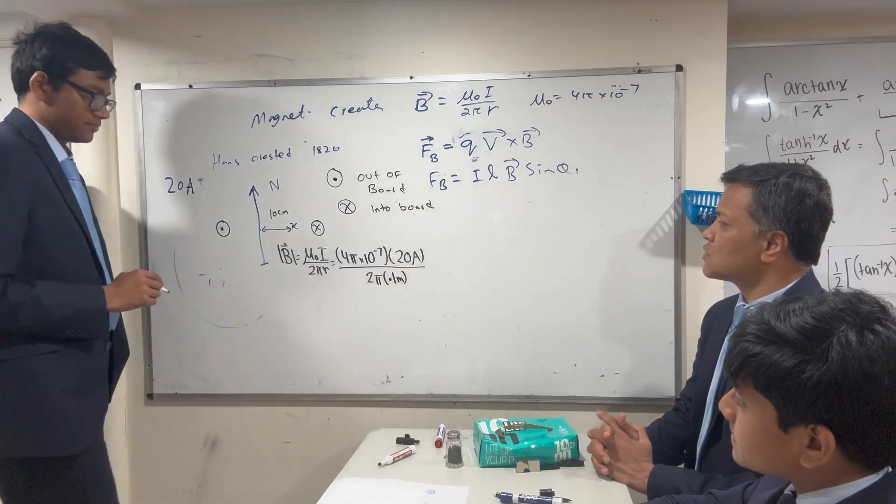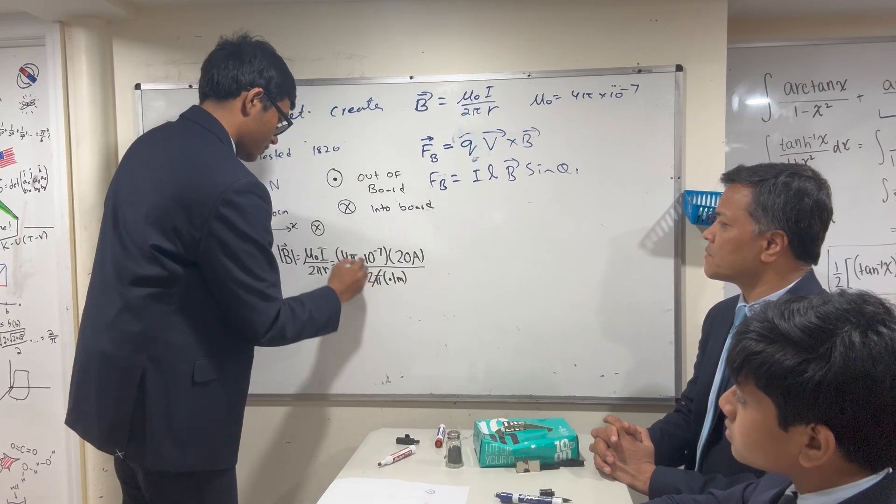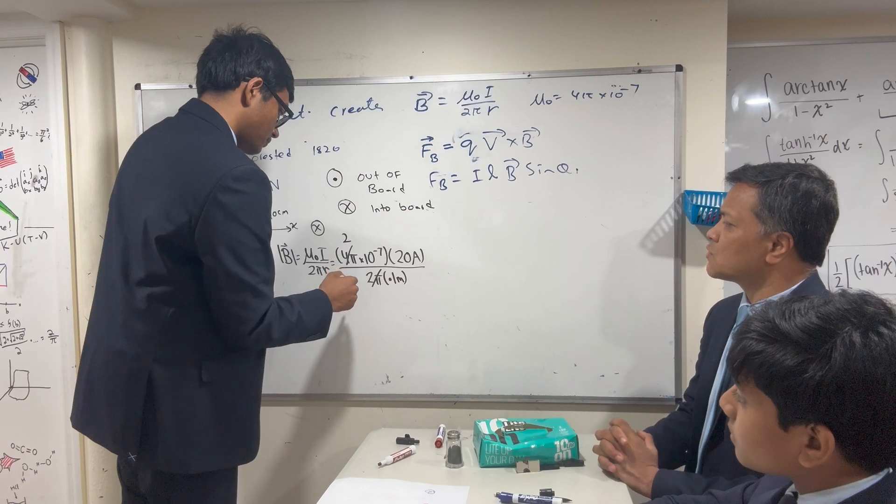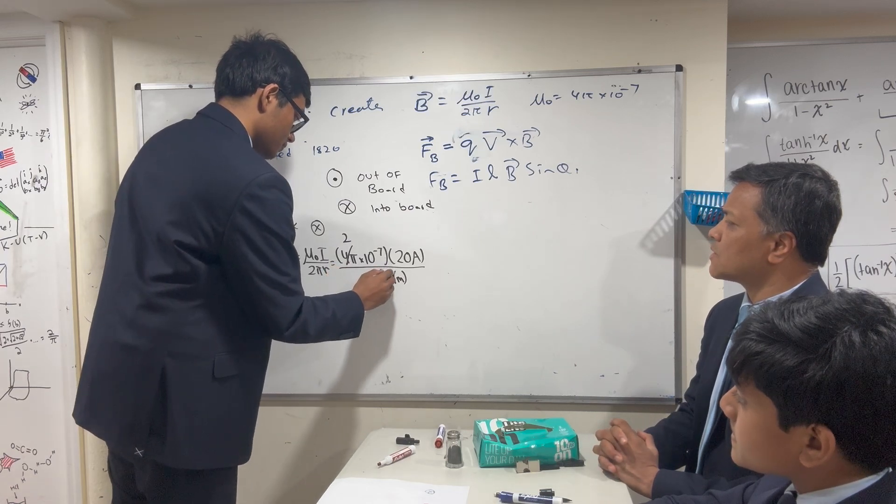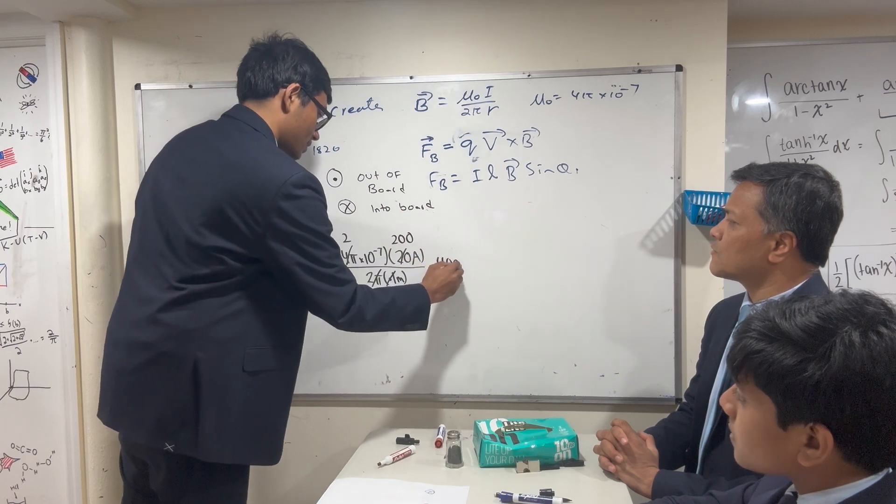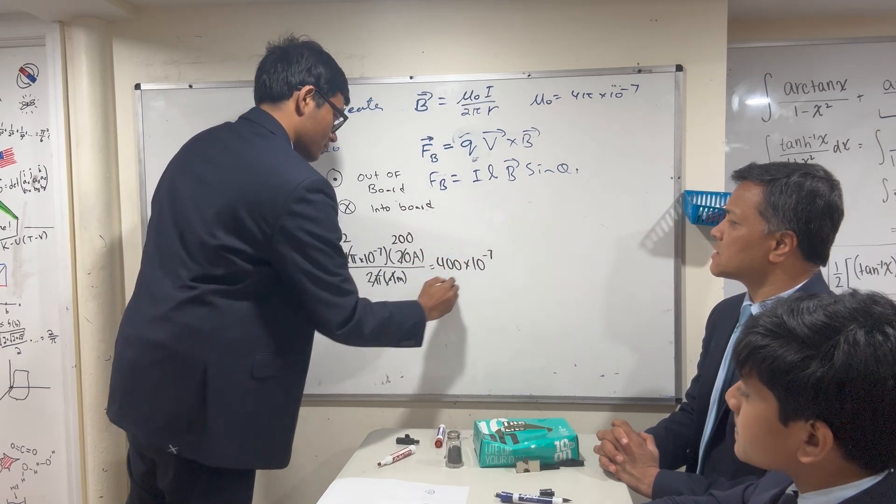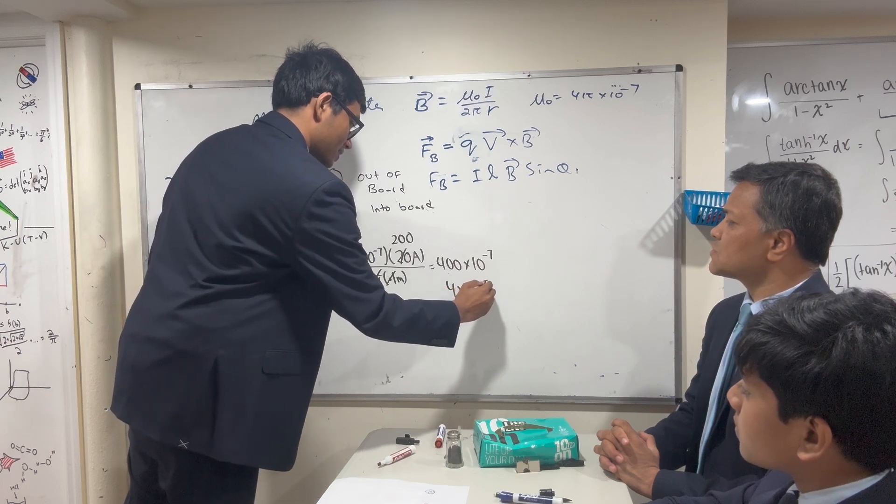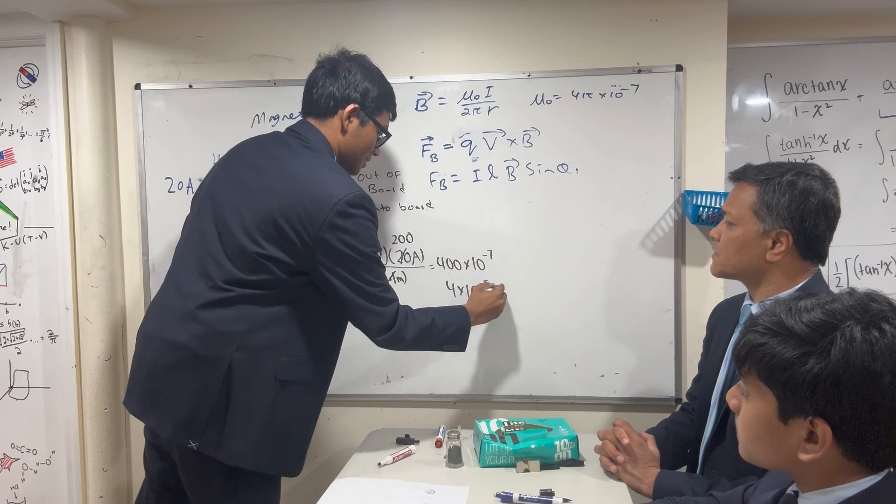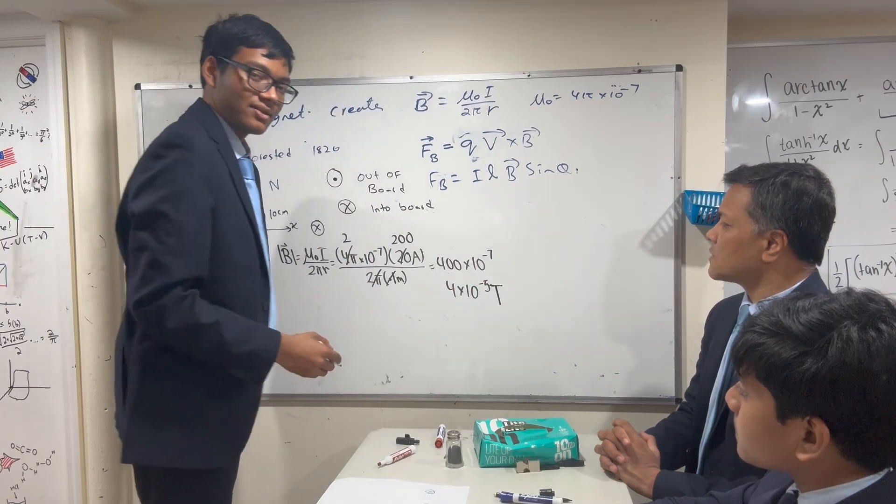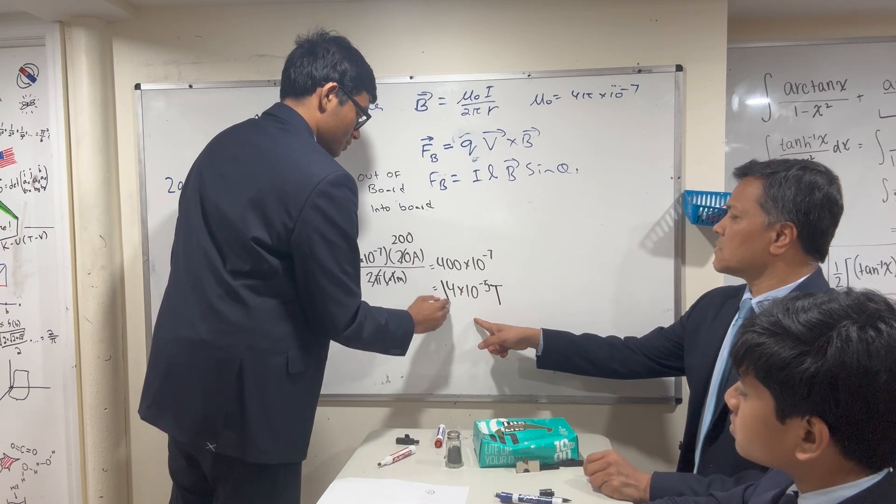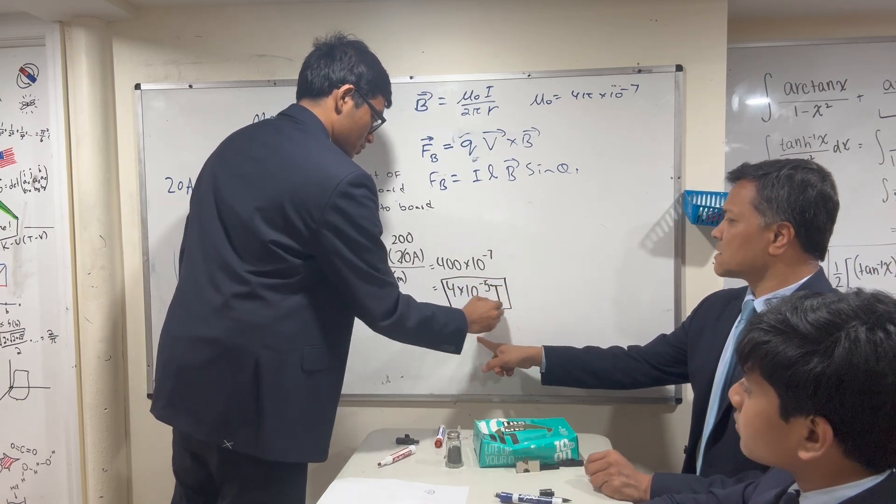2π goes into 4π twice. 0.1 goes into 20, so you write 200. So 400 times 10 to the negative 5 Tesla. This is stronger than the magnetic field of the Earth—this is like four times stronger than the magnetic field of the Earth.